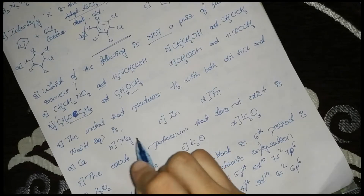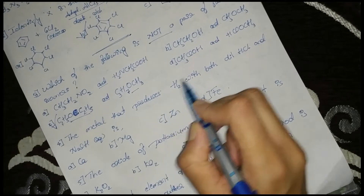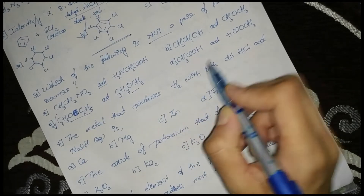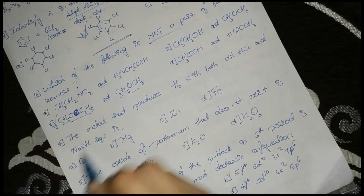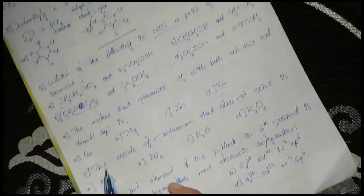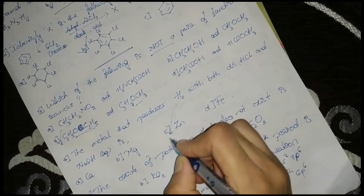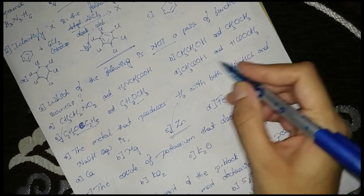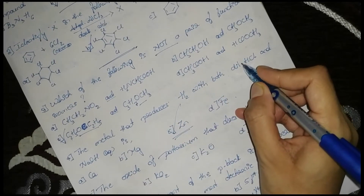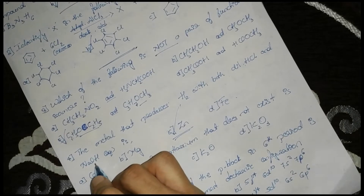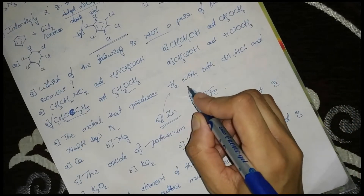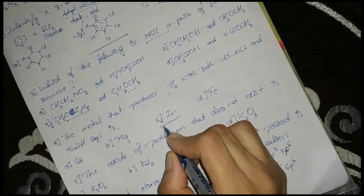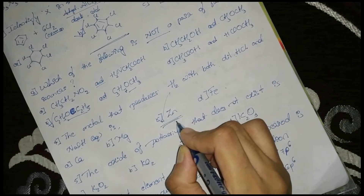Next: the metal that produces H2 with both dilute HCl and aqueous NaOH. This is the amphoteric nature of zinc — Zn reacts with both HCl and NaOH, releasing H2 gas. So zinc is the answer.